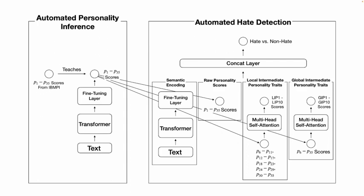It includes four different components. First is semantic encoding, which is very similar to what prior studies have done, where large language models are used to identify semantics of text that might be related to hate speech. On top of it, we apply raw personality scores — directly applying 35 personality scores derived from our student method for automated personality inference.